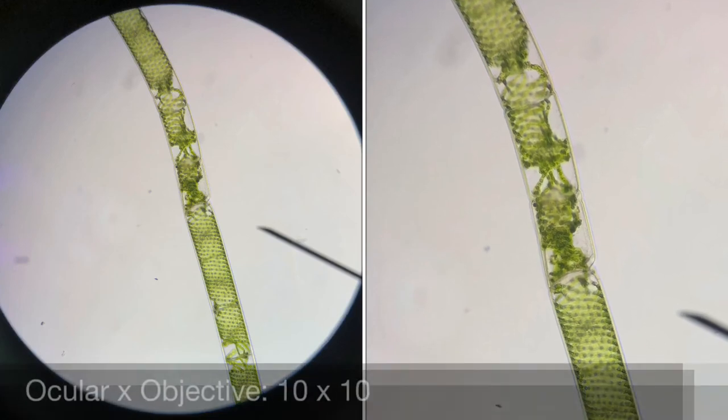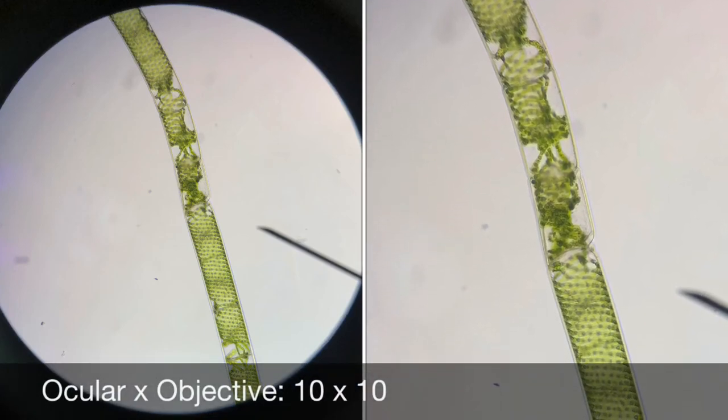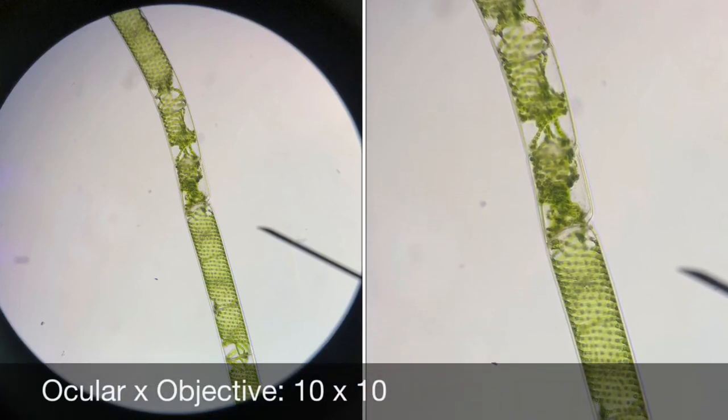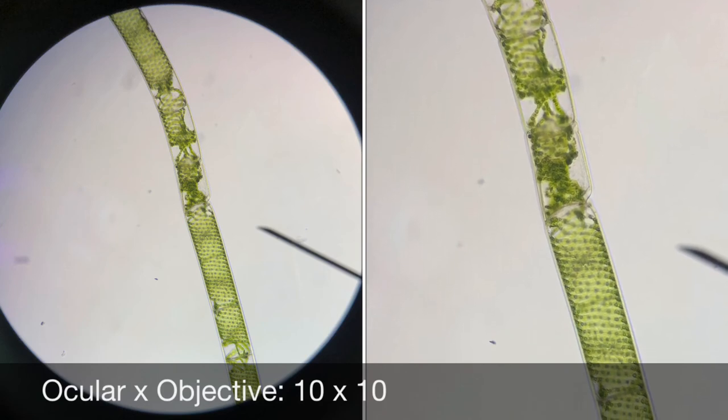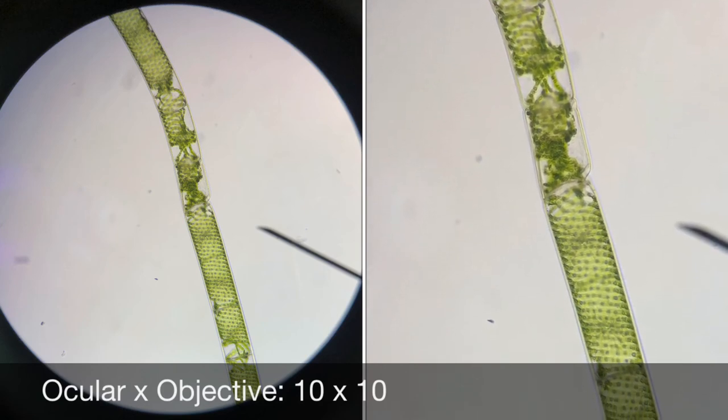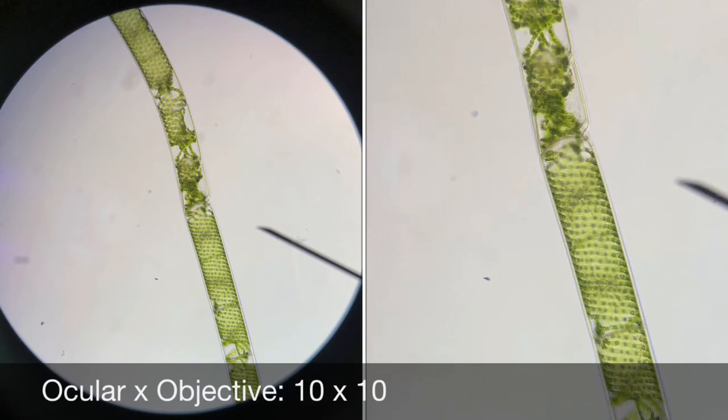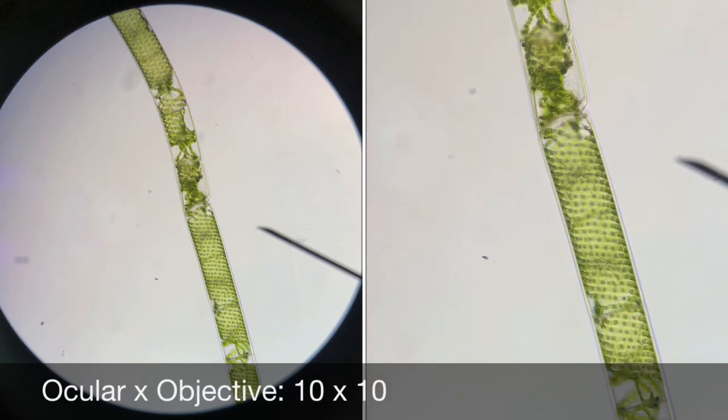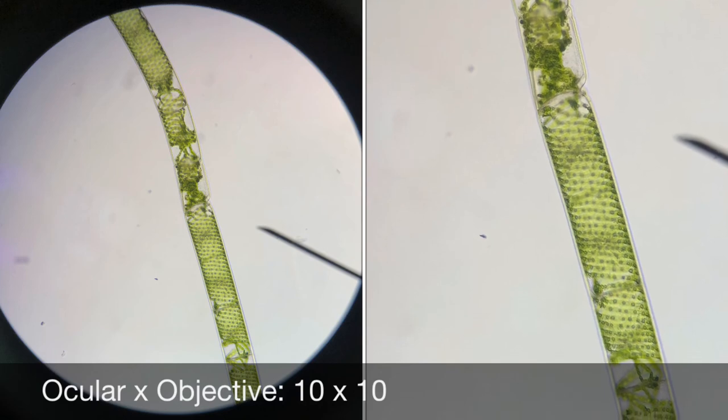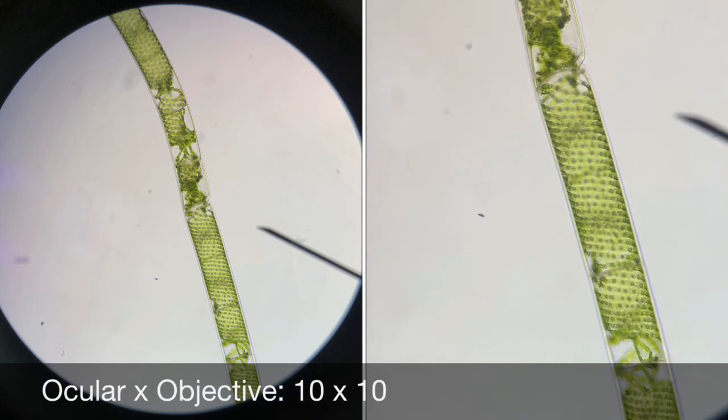Here is the observed specimen under the compound microscope. Draw a picture of the specimen in the lab report. Please write the objective lens magnification and the ocular lens magnification below your drawing.